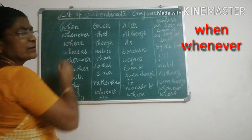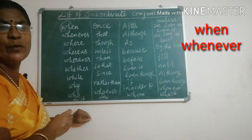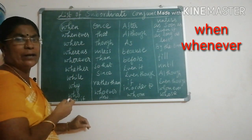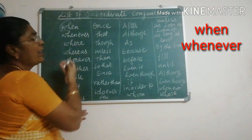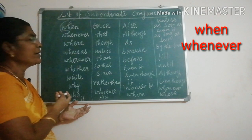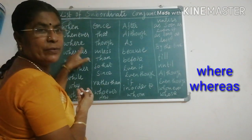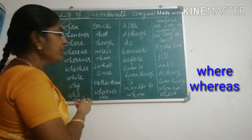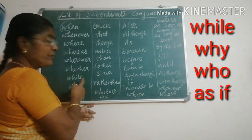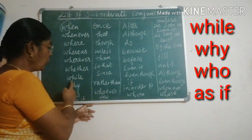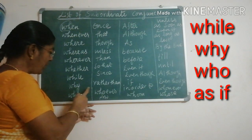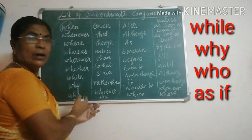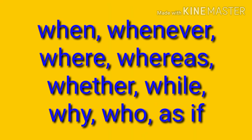All the WH words are subordinate conjunctions. For example: WHEN, WHENEVER, WHERE, WHEREVER, WHETHER, WHILE, WHY, WHO, AS IF. These are all subordinate conjunctions.